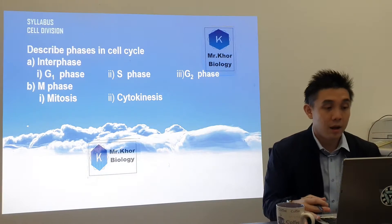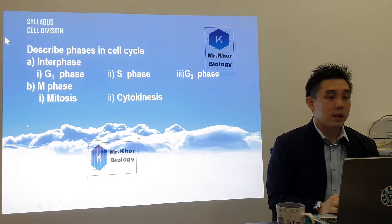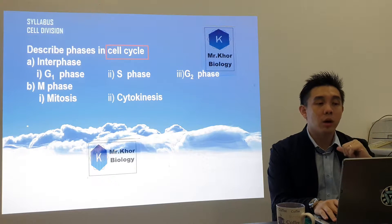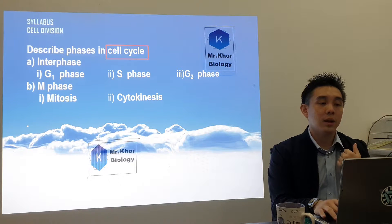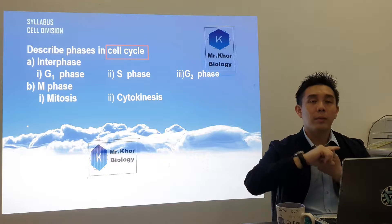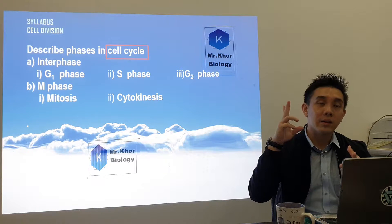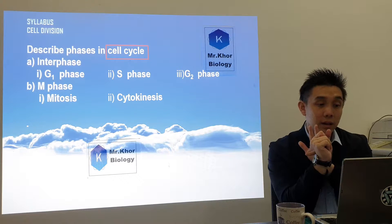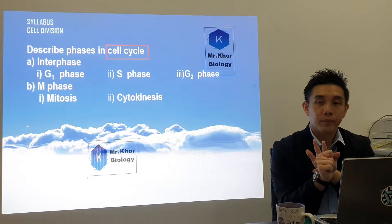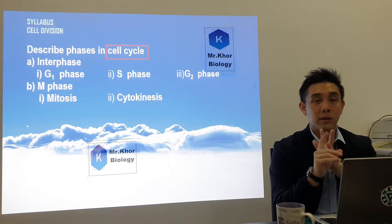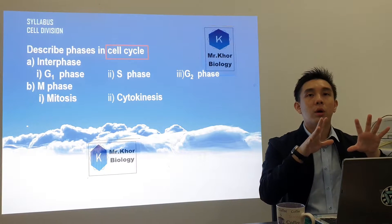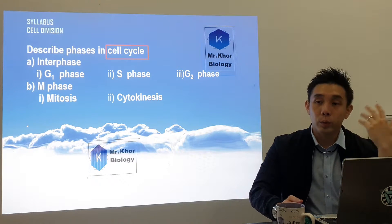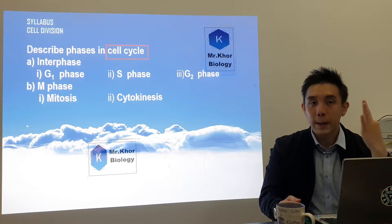Welcome to the topic of cell division. Important things in this topic include mitosis, meiosis, haploid, diploid cells, and the cell cycle. This is the first part of the topic, but there's a video on the number of chromosomes — if you haven't viewed that, please go through that first.